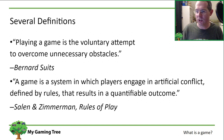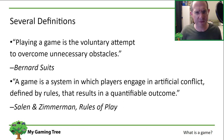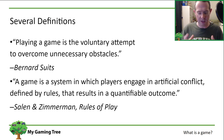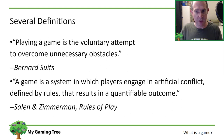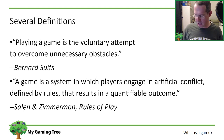Another definition: a game is a system in which players engage in artificial conflict defined by rules that result in a quantifiable outcome. That's a very business-like definition, but you can see there are some opposing forces, there are rules defining how you interact, and then there's an outcome.